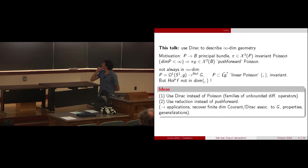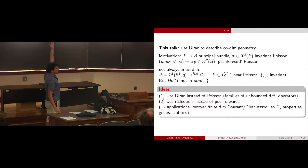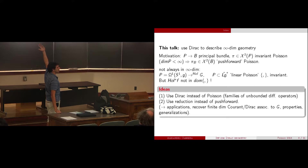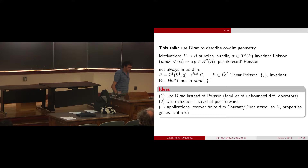I should also mention why you would do this. The geometry induced on the Lie group G is well known and has some properties, but these properties are more transparent before reduction. Before reduction, you notice there is an obvious property that carries over to the quotient, and there are other operations that are more transparent in infinite dimensions.